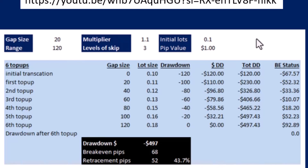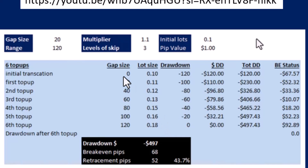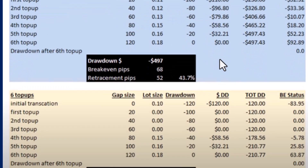Basically, the Liberator EAs use a top-up technique where if a trade goes negative, it will open more trades in the same direction at various points and also increase the lot size as it goes along — starting with low lots and increasing. The normal way it works: the initial transaction happens, then after 20 pips another transaction with a higher lot size, then after 40 pips, and so on. The numbers are just examples to explain the strategy.